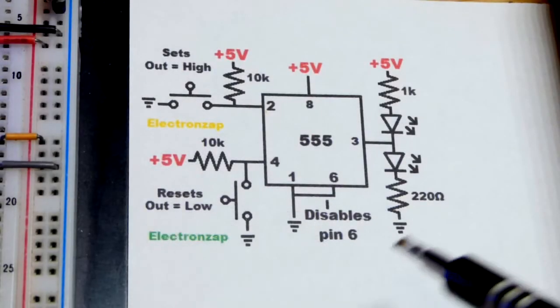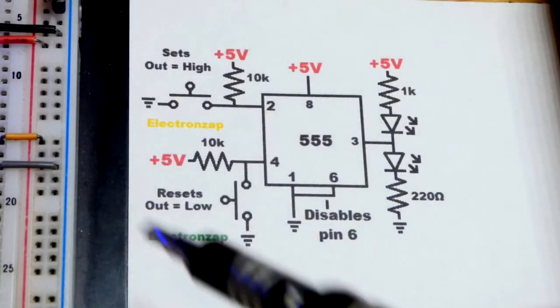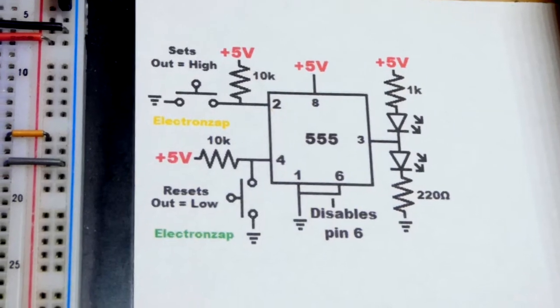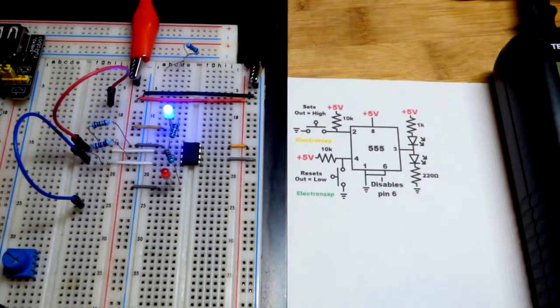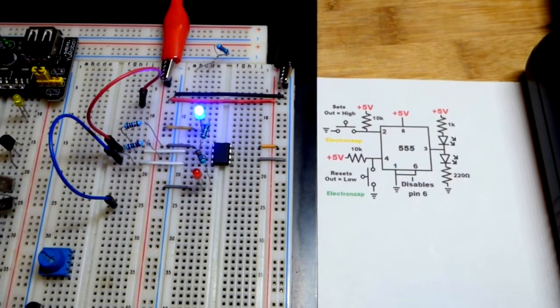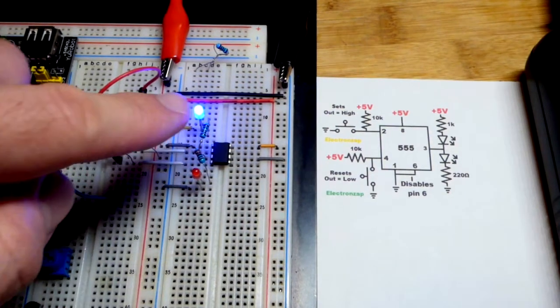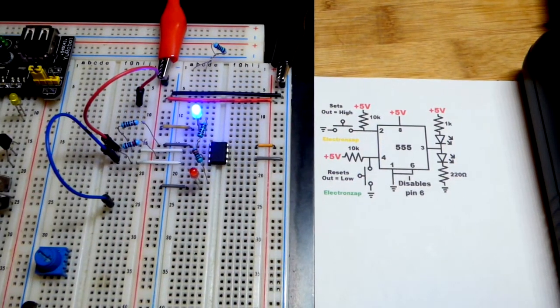So now in this video we're going to look at the 555 timer here, wired in bi-stable mode. Bi-stable means that the output has two stable positions. You can see right now the output's low, that's how I have the blue LED wired up.